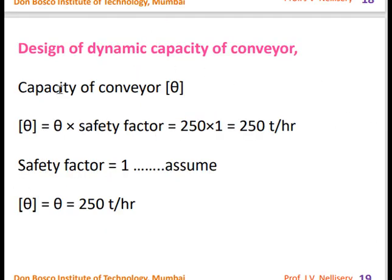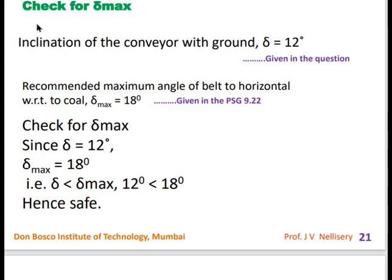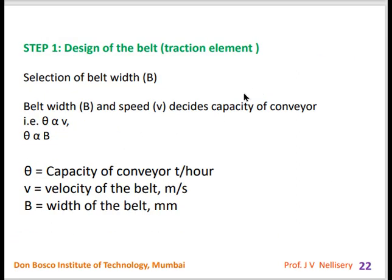The design capacity equals the given capacity multiplied by the factor of safety. Taking factor of safety as 1, design capacity = 250 tons per hour. From PSG 9.22, properties of coal: maximum inclination 18°, density 0.65–0.78 tons/m³, angle of repose 50°. Since the required inclination (12°) is less than the maximum allowable (18°), this conveyor can be designed.